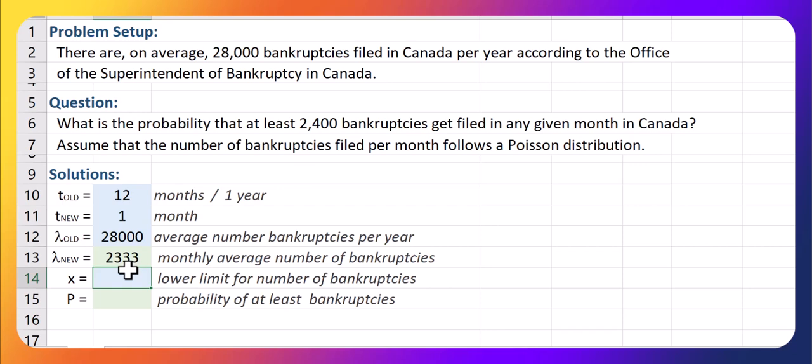Now we want at least 2,400. If we want at least a certain amount, the 2,400 is included in the range. So take 1 away from that when we're doing the complement.